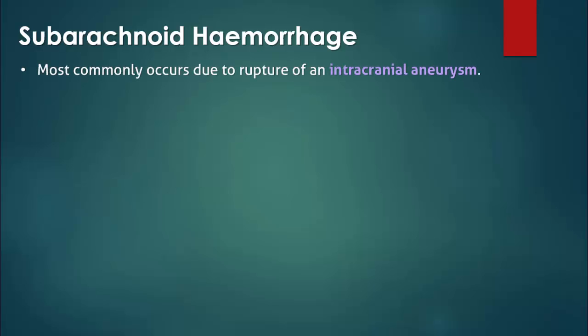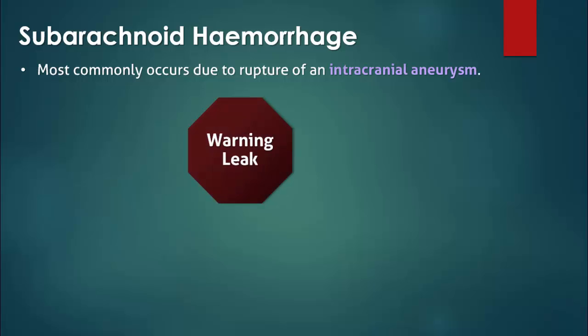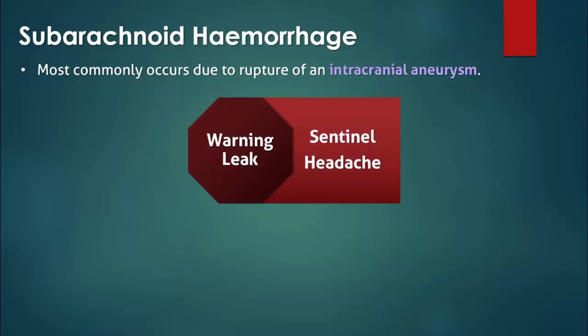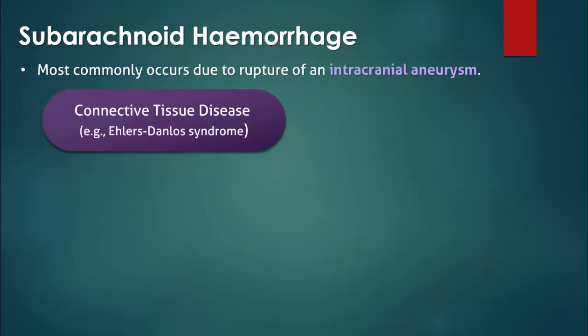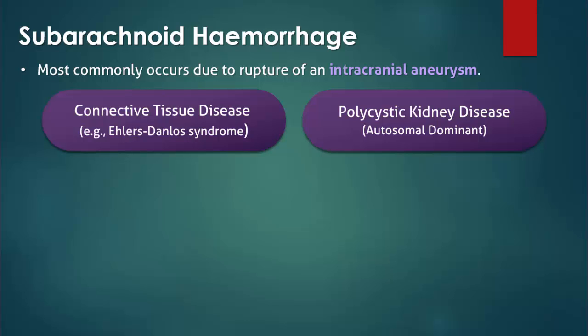Subarachnoid hemorrhages most commonly occur due to rupture of an intracranial aneurysm. Many of these patients suffer a minor hemorrhage, also known as a warning leak, in the preceding days or weeks. The patient history may also reveal a connective tissue disease or polycystic kidney disease, both of which are associated with the presence of an intracranial aneurysm.